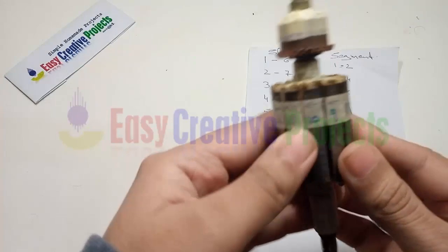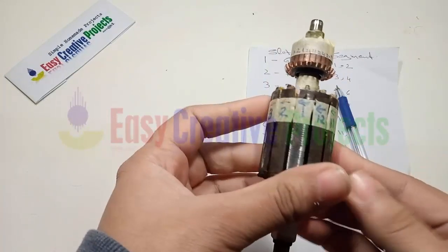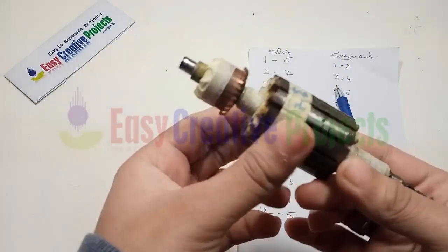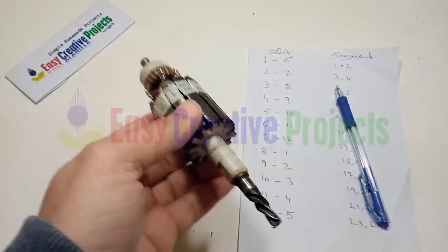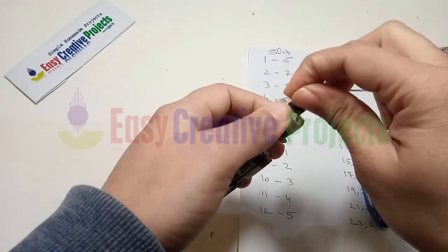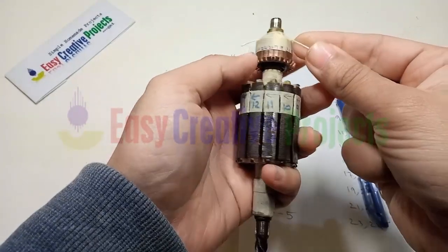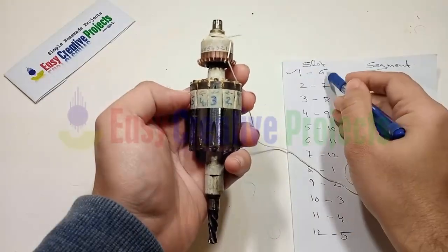Now write the numbers on armature segments and slots, and start winding with the help of this chart like this.